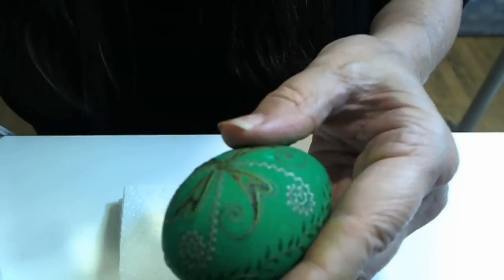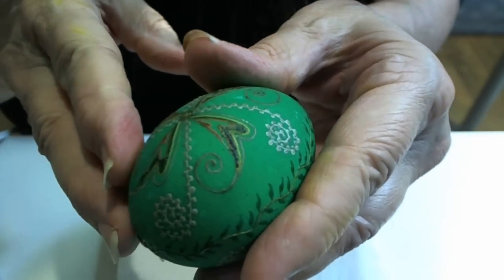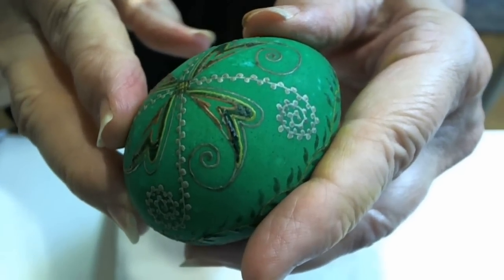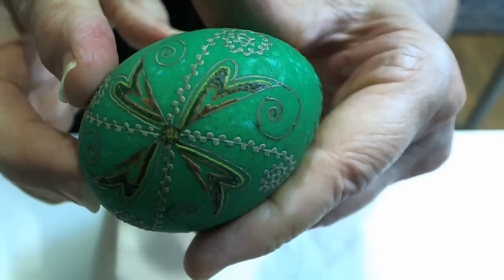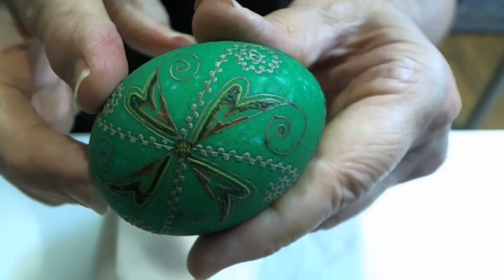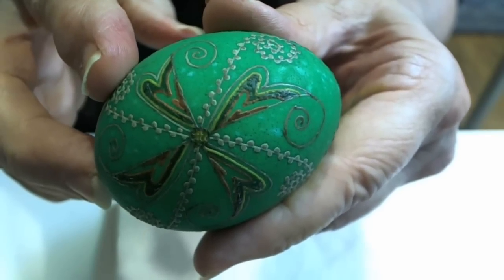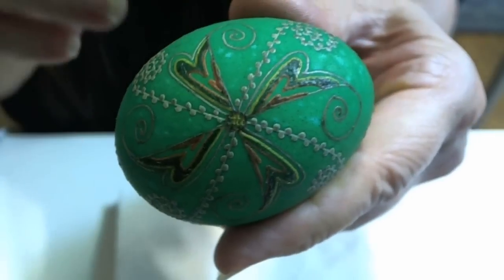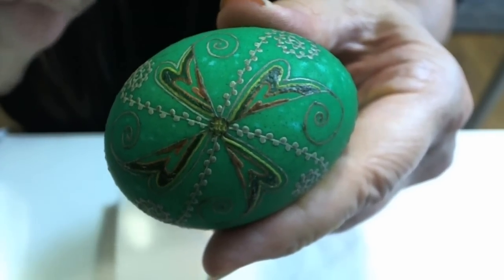My next step will be to take the green dye off because my next color is going to be red. And of course, I don't want to put red over the green dye. So I will take the ivory soap, wash the green off. Before I put it into the red dye, I will give it a squirt of the vinegar.